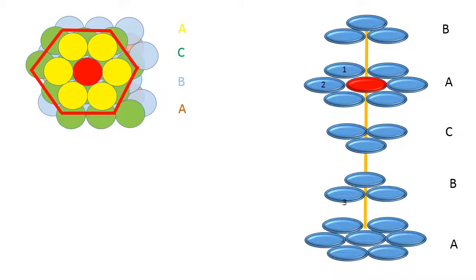Let us see the coordination number now. I can see that there are 6 spheres surrounding the red sphere, and there are 3 spheres below the red sphere and touching it, so the total coordination would be 9. If I place the B layer above the red sphere, I will see that there are 3 spheres touching it, and therefore the coordination will be 12. This A, B, C, A, B, C type of arrangement would be called a cubical close-pack arrangement, and it has a coordination number of 12.